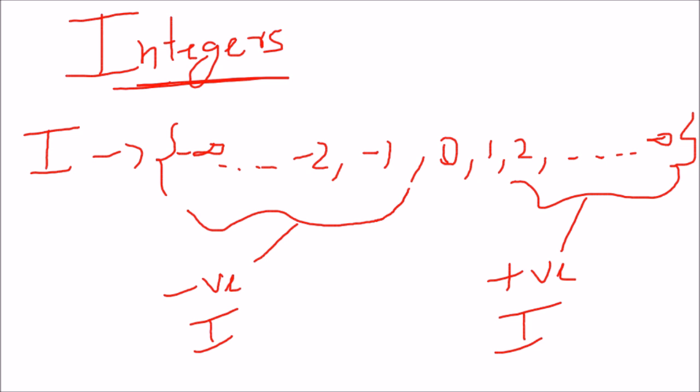The integer 0 is neither positive nor negative and has no sign in itself. Integers are denoted by the capital letter I. Now moving on to the next part — rational numbers.